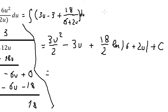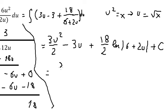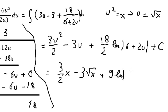We know that u squared equals x, so u equals the square root of x. We substitute everything back: the square root of x squared gives x, minus 3 times the square root of x, and 9 times the natural log of the absolute value of 6 plus 2 times the square root of x, plus C. That is the final answer. Thank you for watching.